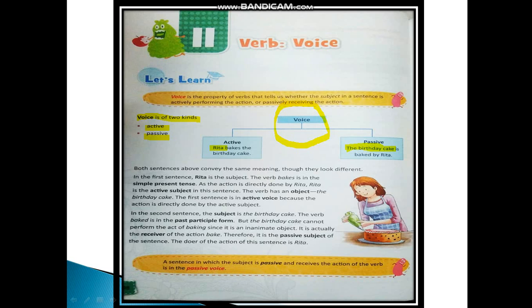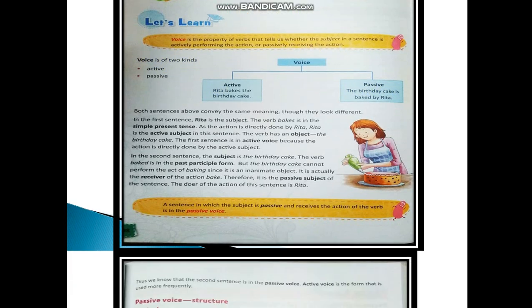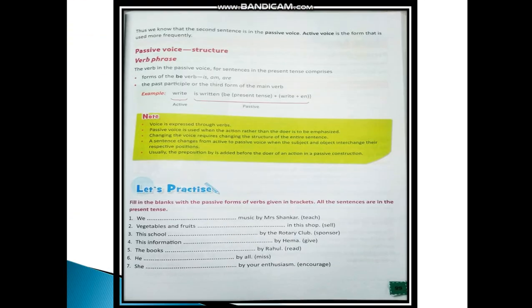In the second sentence, the subject is 'the birthday cake.' The verb 'baked' is in the past participle form. But the birthday cake cannot perform the act of baking since it is an inanimate object — it needs someone to bake it. So it is a passive subject: it is not performing any action, it is receiving the action. It is actually the receiver of the action 'bake,' therefore it is the passive subject. The doer of the action is Rita. A sentence in which the subject is passive and receives the action of the verb is in the passive voice. Thus, the second sentence is in the passive voice.